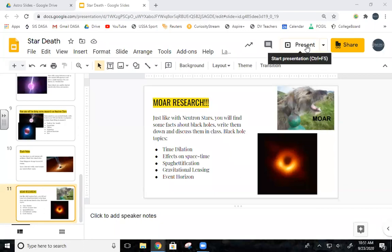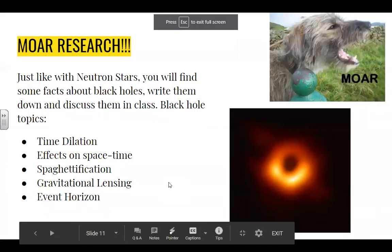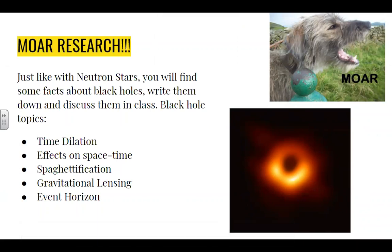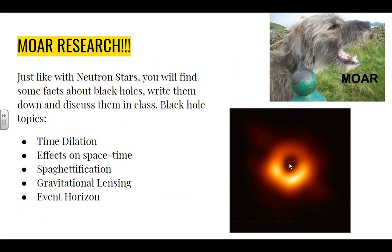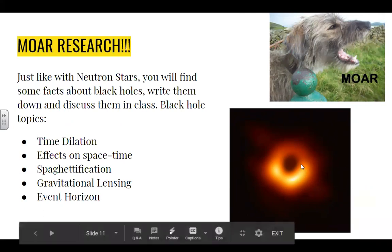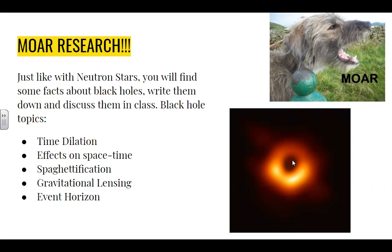The event horizon — the event horizon is what we see as the black hole. The actual black hole is hidden behind the event horizon. The event horizon is the point at which the escape velocity — the amount of velocity needed to escape from the black hole — the gravity becomes so strong that the escape velocity is above the speed of light. So nothing can escape beyond that point; therefore we see it as completely black.